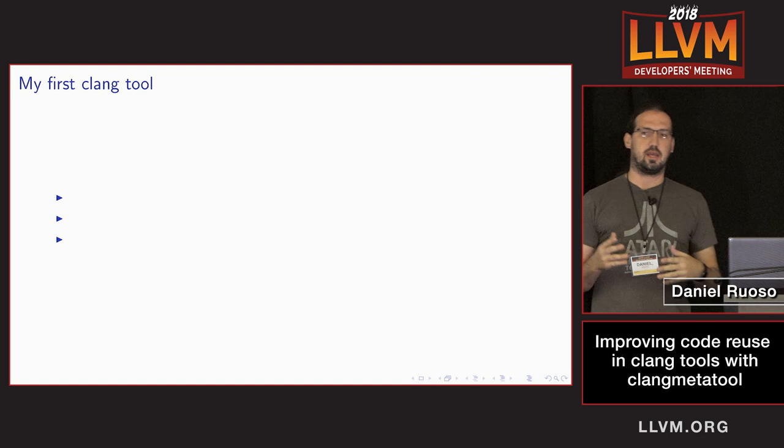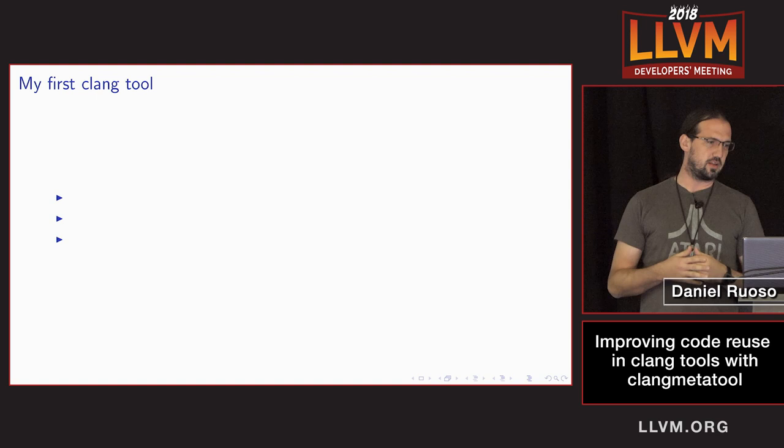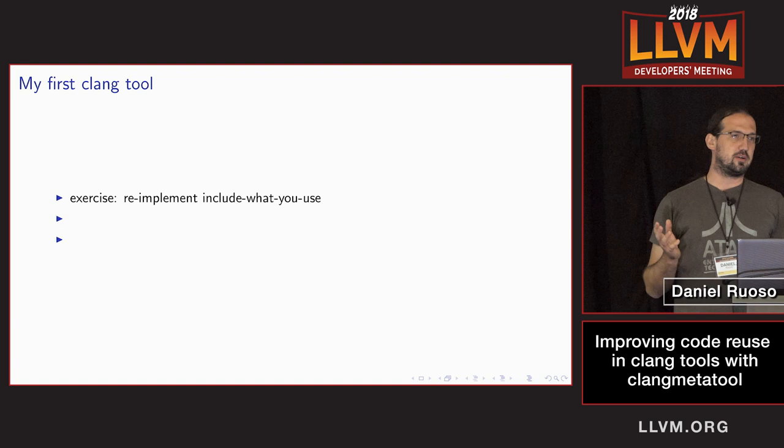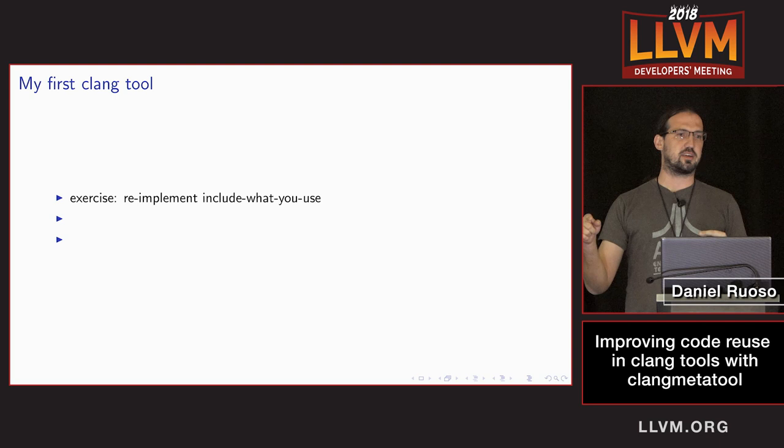Since this talk is about sharing lessons learned in writing tools, I'll discuss how I started about a year ago when Bloomberg formed this new team to write robots that rewrite code. The first thing I did was an exercise: reimplementing include-what-you-use. If you don't know what that is, it's a tool that rewrites your header inclusions to ensure you're not relying on transitive includes and not including things you don't use.